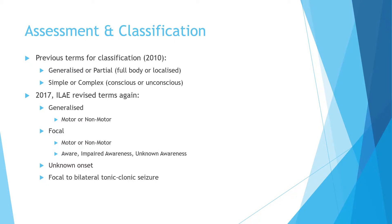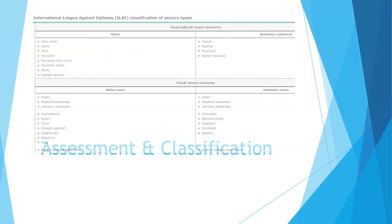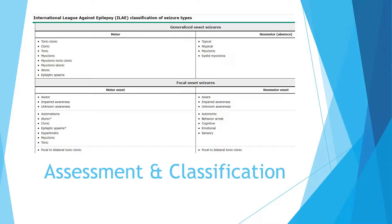A seizure that begins focally but spreads to involve both hemispheres is called a focal to bilateral tonic-clonic seizure, which is actually a common presentation. Specific types include tonic-clonic seizures — with both strong muscle tone and sustained rhythmic involuntary jerking of the limbs — as well as simply tonic seizures (involuntary strong muscle tone only), clonic seizures (jerking only), and myoclonic seizures, which involve muscle spasms somewhat different from the jerking seen in tonic-clonic or clonic seizures.